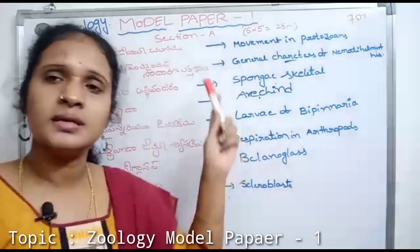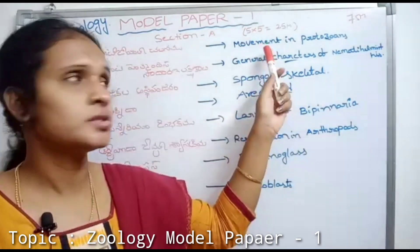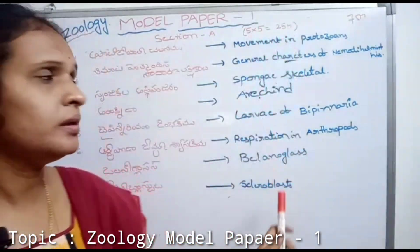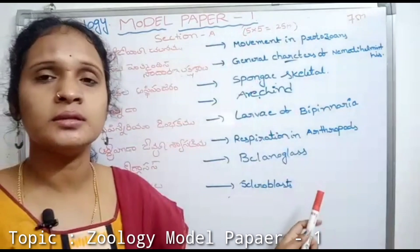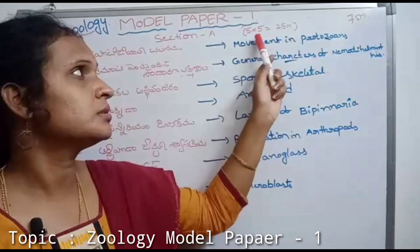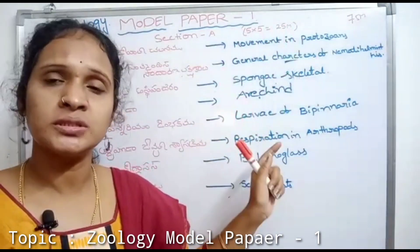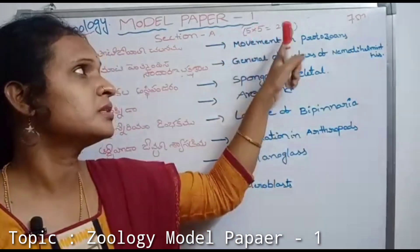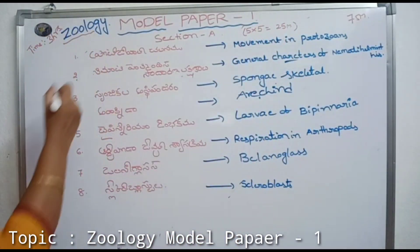There are two sections, Section A and Section B. Section A is 5 marks. Total is 25 marks. We will select 3 choices. Each question carries 5 marks, so Section A is 25 marks.